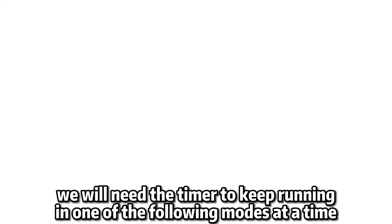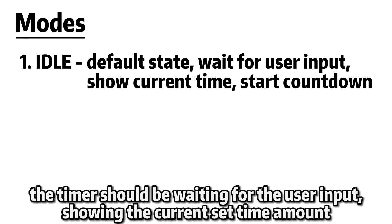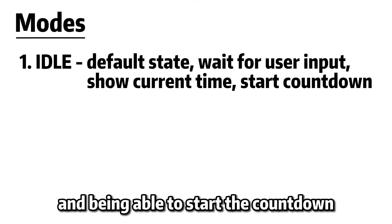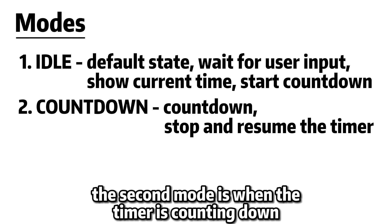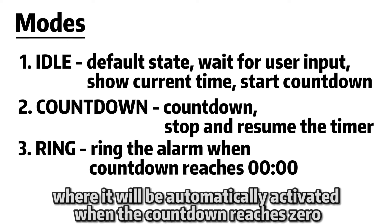Let's see how we can implement all this in our code. We will need the timer to keep running in one of the following modes at a time. The first mode will be the default state when the timer is powered up — in this mode the timer should be waiting for user input, showing the current set time, and being able to start the countdown. We will call this idle mode. The second mode is when the timer is counting down — we will call this countdown mode. The third mode is the alarm mode, where it will be automatically activated when the countdown reaches zero.